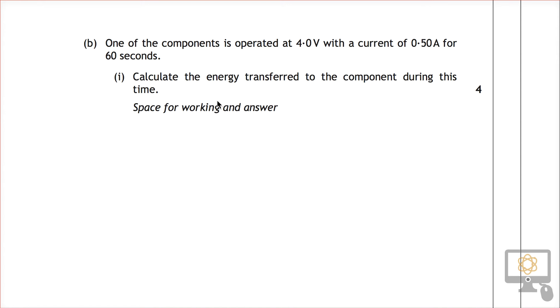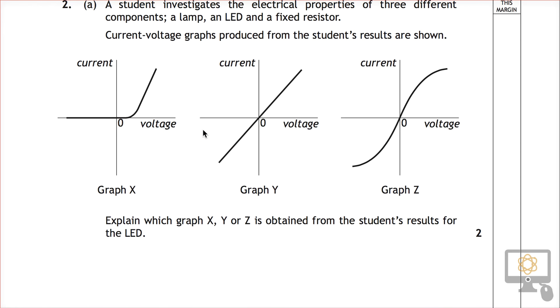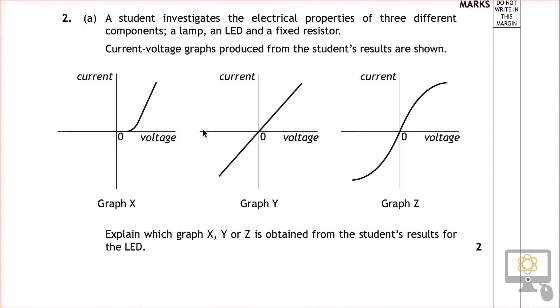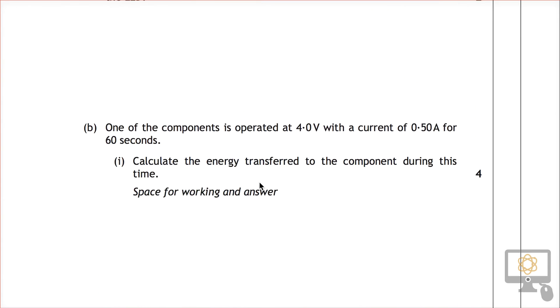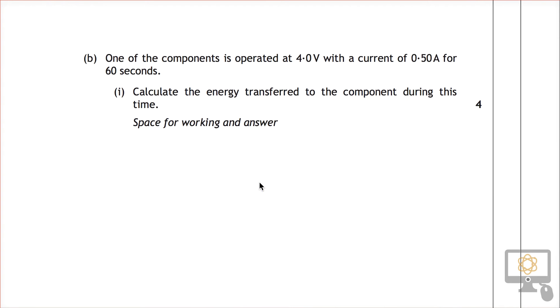We're going to be looking at question 2b part 1 of the National 5 2015 question paper. Let's just have a look at question 1. Remember this is our question, the first part of the question. It relates to graphs for LEDs and lamps and resistors and so on. So part B is really not related to that in any way at all.